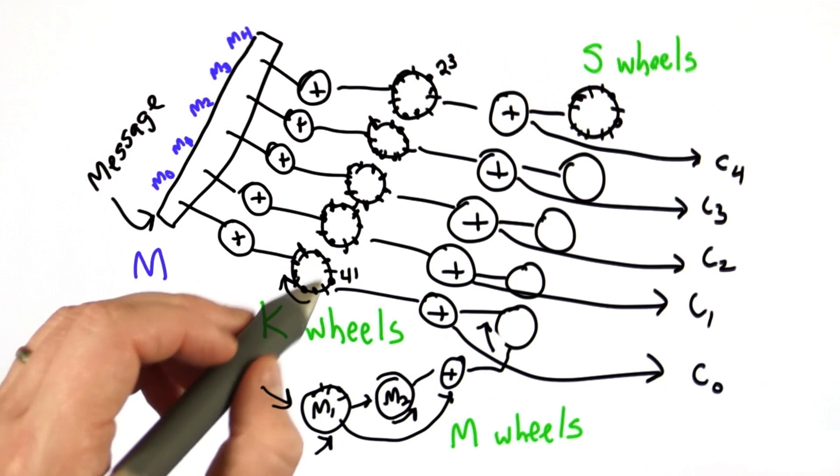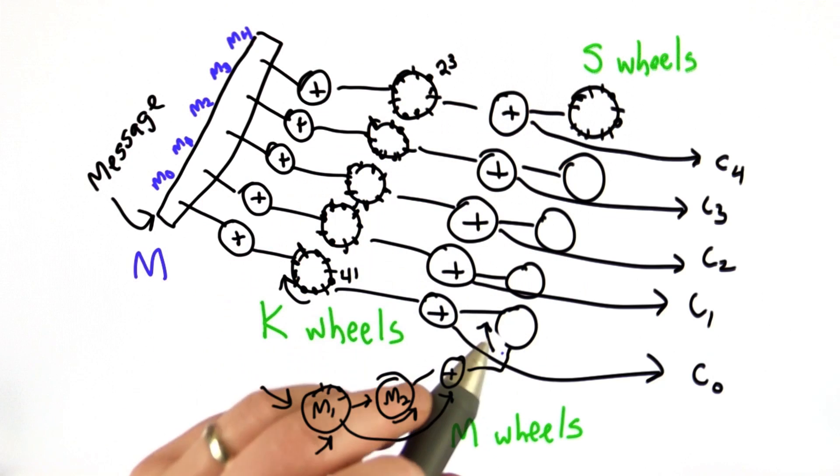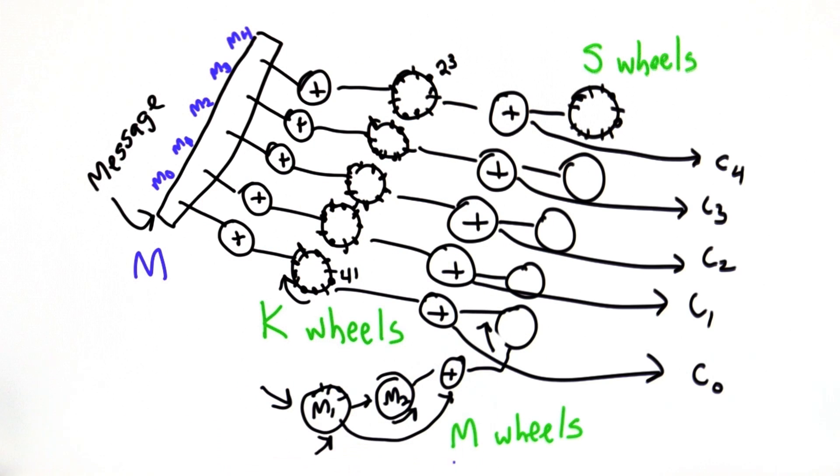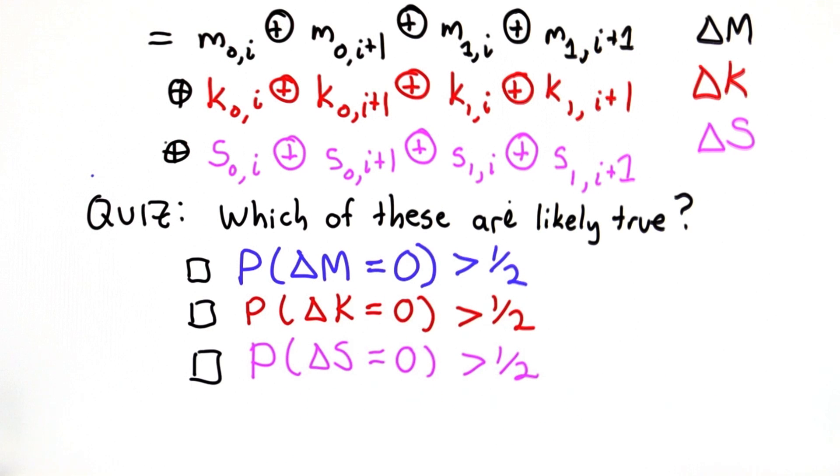These are the s wheels. The s wheels rotate only when the output of the m wheels is a 1. Sometimes they don't rotate at all, sometimes they all rotate at the same time.